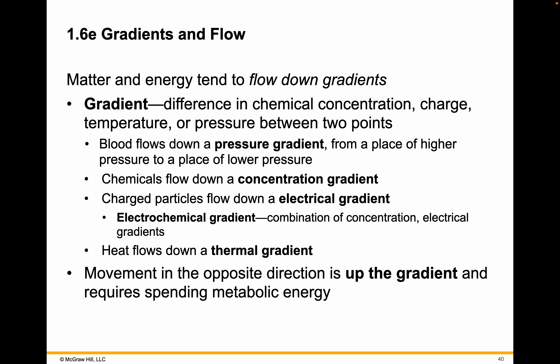Blood, for example, flows down a pressure gradient — there's higher pressure where the heart is, less when you reach the capillaries. Chemicals flow down concentration gradients; we'll be talking about this numerous times getting things from one side of a plasma membrane to another. Charged particles flow down an electrical gradient — we call this an electrochemical gradient. Whether they are electrons or ions, they will tend to move: opposites attract. Heat will flow down a thermal gradient.